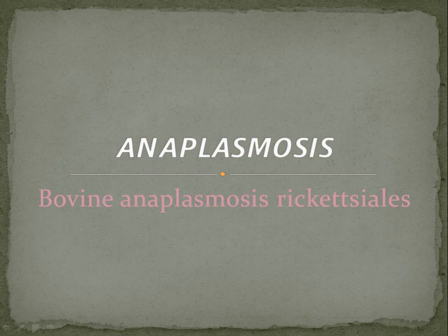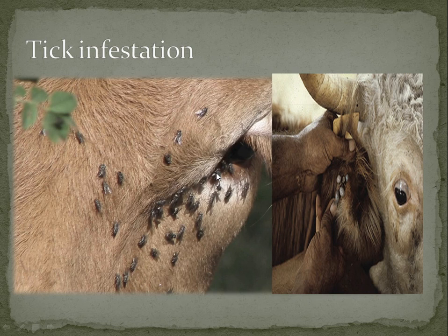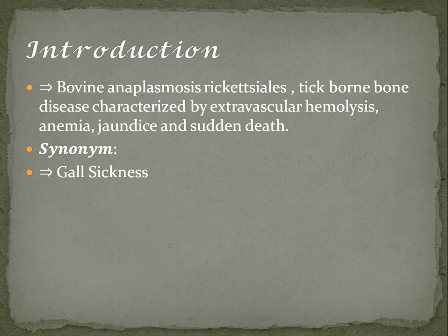Anaplasmosis also occurs due to tick infestation. You can see a lot of ticks here in the ear of the cattle and on the face of the cattle. To start with the introduction, it is bovine anaplasmosis rickettsials, also called a tick-borne disease.